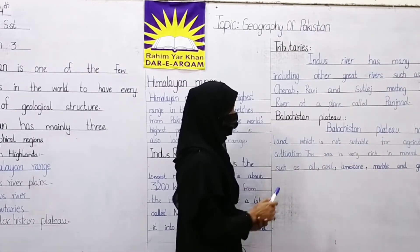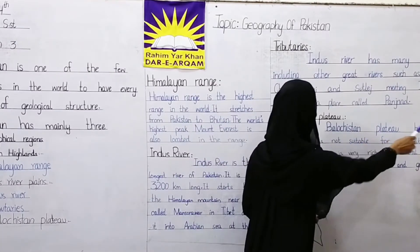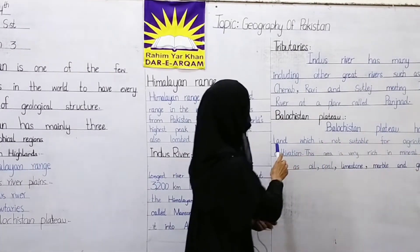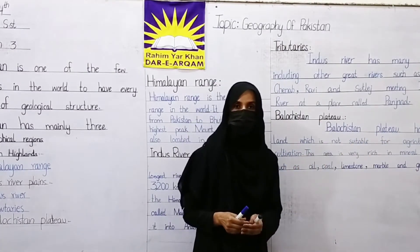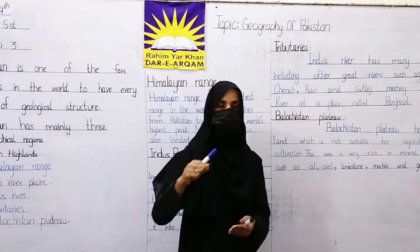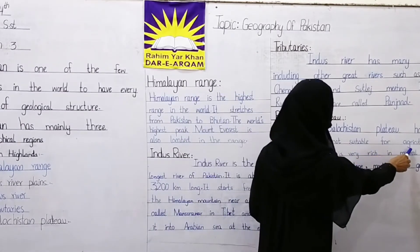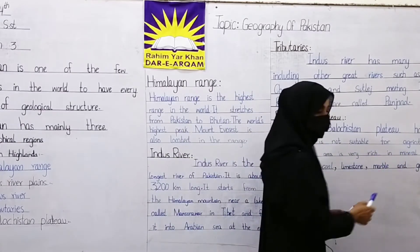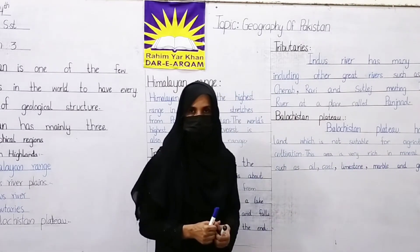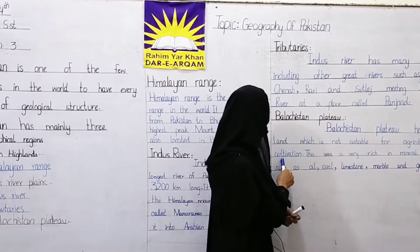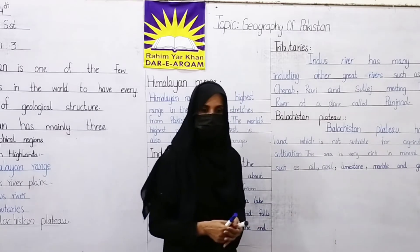Balochistan Plateau. The Balochistan Plateau has uneven land, which is not suitable for agriculture and cultivation.